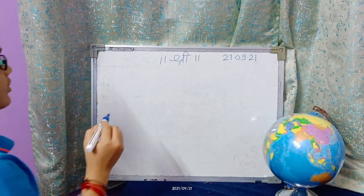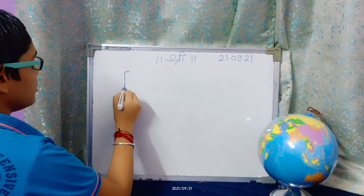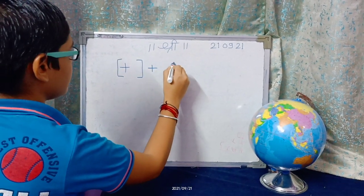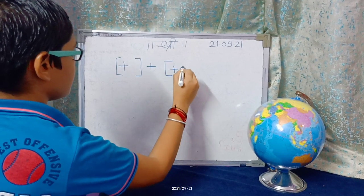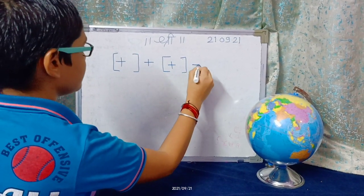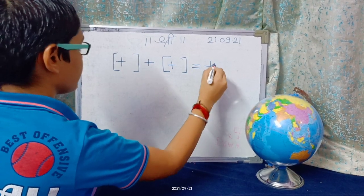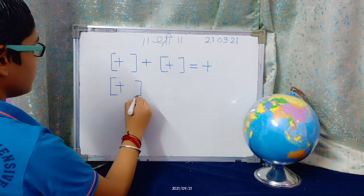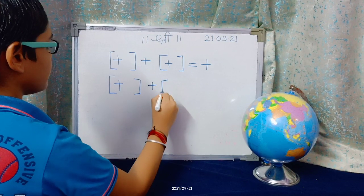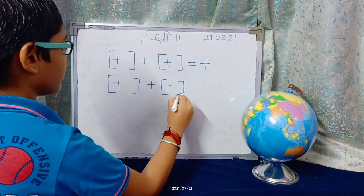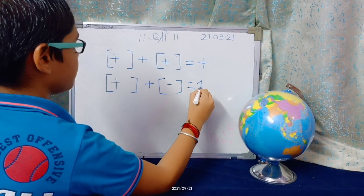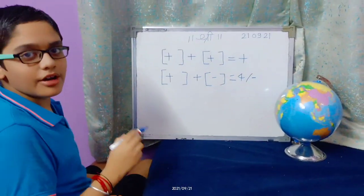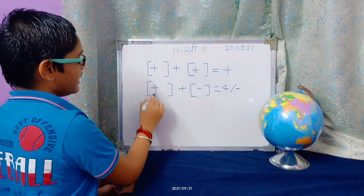So first rule is plus plus plus equals plus. Then plus plus minus equals plus or minus, it depends upon the number which is greater or smaller.